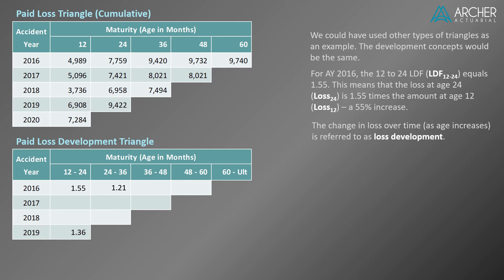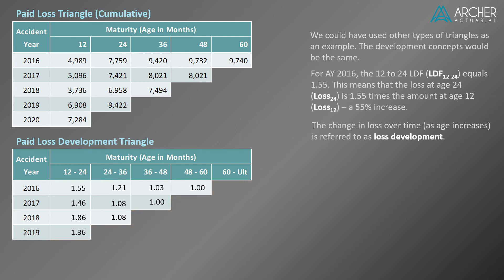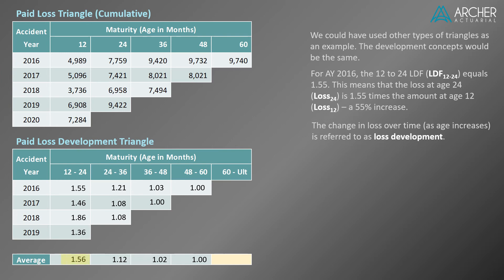We're going to perform the remaining LDF calculations behind the scenes and populate the rest of the triangle. Notice that the development triangle is smaller than the loss triangle. This is because two data points are required to calculate each LDF, so the development triangle will always have one less diagonal than the loss triangle. Next, we're going to calculate some averages. For example, 1.56 is the straight average of the highlighted LDFs and represents the average development in the historical data between age 12 months and age 24 months.